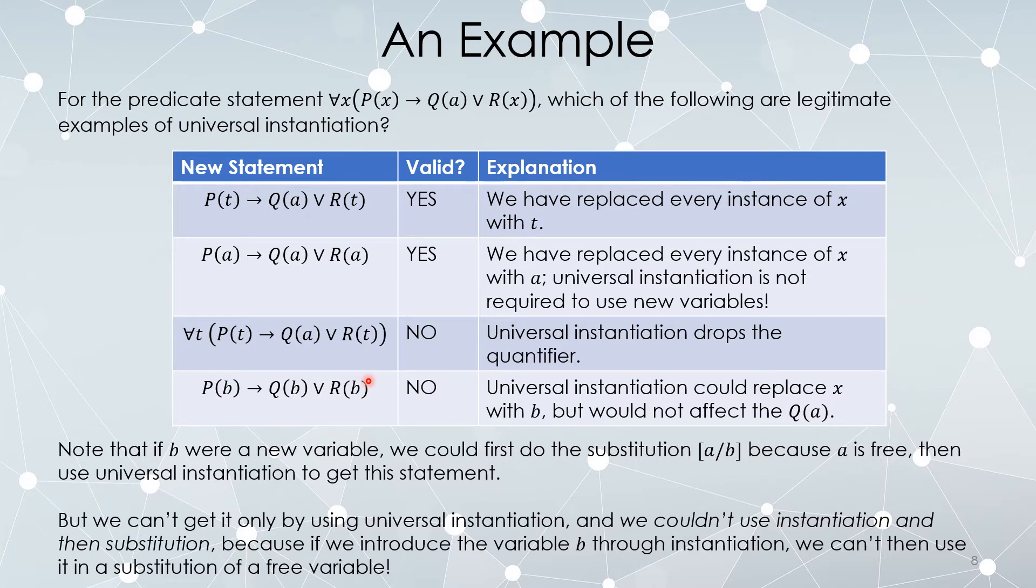Also, what you couldn't do is first do the instantiation P(b) implies Q(a) or R(b) and then the substitution because the substitution would then be using a variable b that already exists. So even though you can get this statement, you could also get it using bad reasoning.